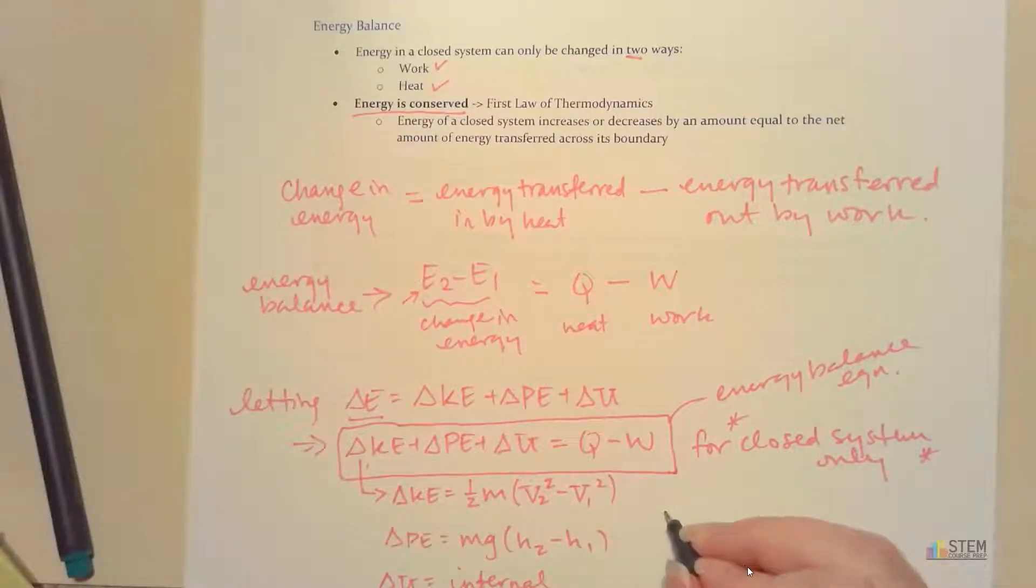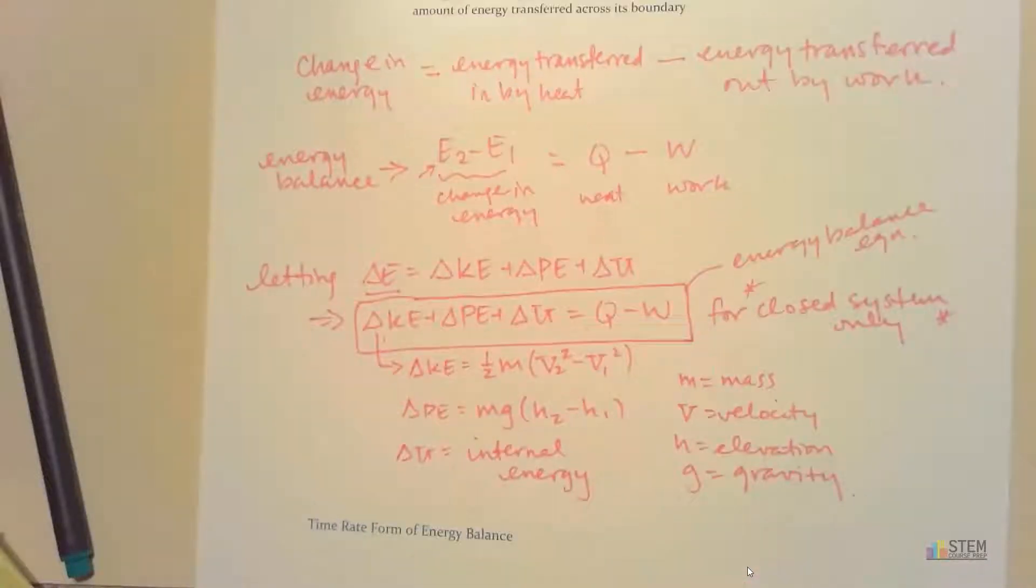And then let's label these parts or variables. So mass is going to be M. We've got V, which is velocity. H is elevation. G is gravity.